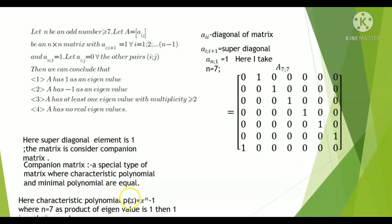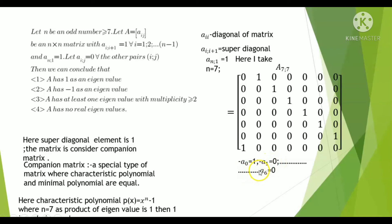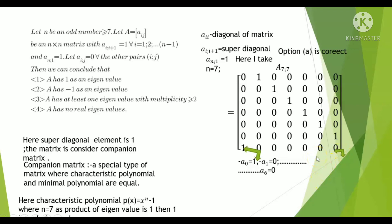The characteristic polynomial is p(x) = x^n minus one, where n equals seven. Since the product of eigenvalues equals one, one is also an eigenvalue. Here minus a_0 equals one and minus a_1 through a_6 equal zero, confirming option A is correct.